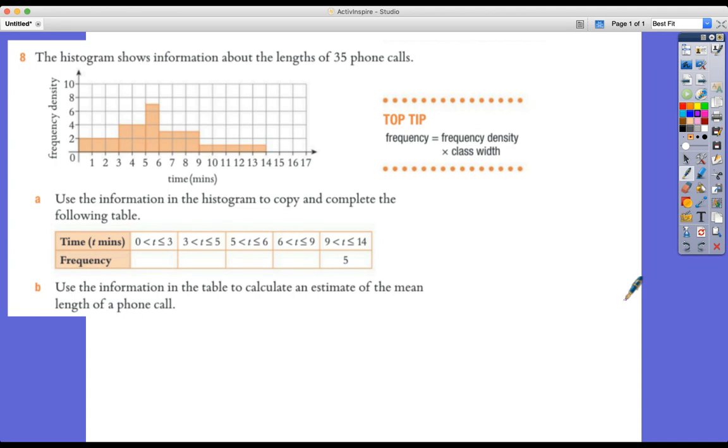So we're given the histogram. This is all assessing your real understanding of what the histogram is showing. And there's a really helpful top tip here that frequency equals frequency density times class width. So we learned that in the last tutorial.